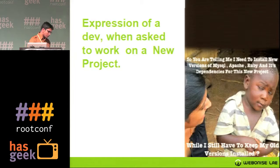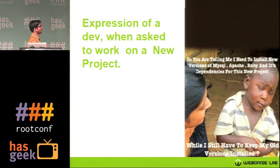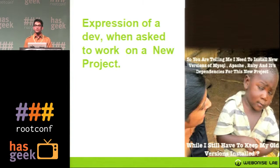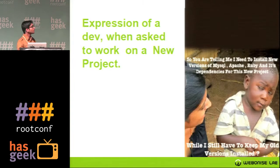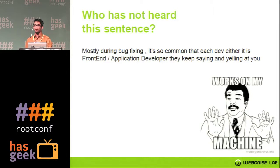So when you're told to work on multiple projects, you have to keep your old stack as it is. You're being told you need to install a newer version of MySQL, Apache, Ruby, and its dependencies for the new project, but you have to keep all the previous versions installed in your system. It's very, very tricky, because if you mess up your development environment, you have to redo everything. And one of the biggest problems we face every day: 'it works on my machine.' When someone gets an error, you say 'I'm not getting this error — I cannot replicate it.' So our development environments have to be identical.